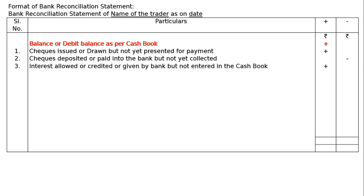The third item is interest allowed or credited by the bank but not recorded in the cash book. Interest is added to the pass book balance by the bank — the bank does not come to your office to pay it. Since the pass book balance is already increased, you have to increase the cash book balance accordingly.